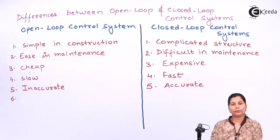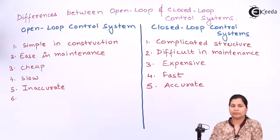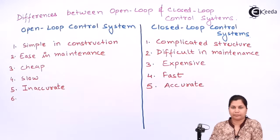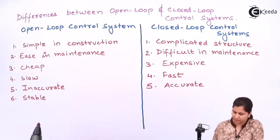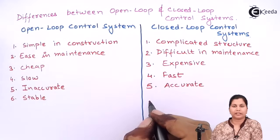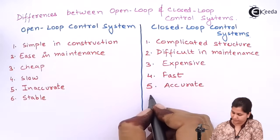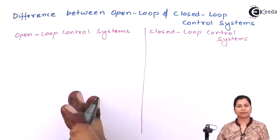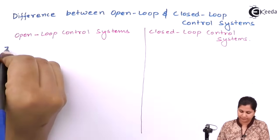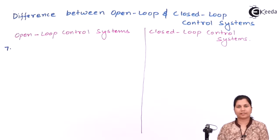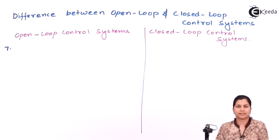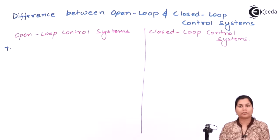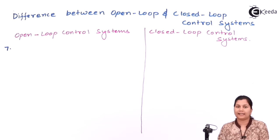The open loop control systems are more stable — there are no stability problems in them. Whereas closed loop control systems can be unstable. The seventh difference is that the open loop control system is more sensitive to disturbances, noise, and changes in the environment, whereas the closed loop control system is less sensitive.